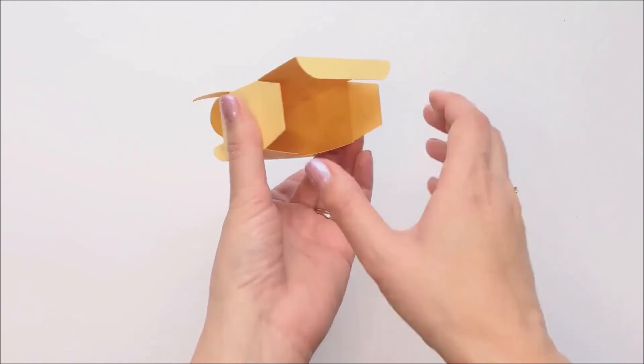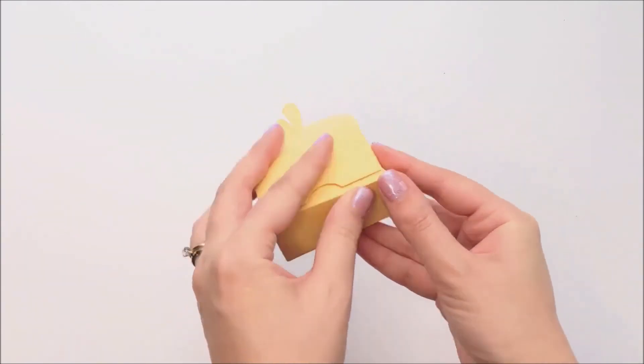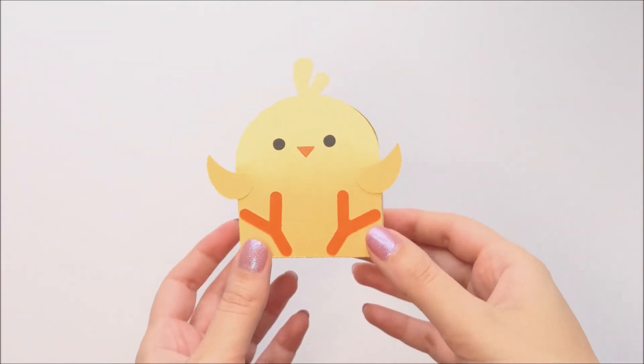Once the glue is dry, you can fill your box and then close the bottom lid. Oops, my wing fell off. There we go. The booboo wing is all fixed.